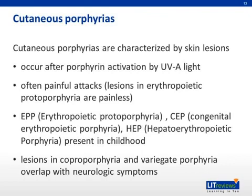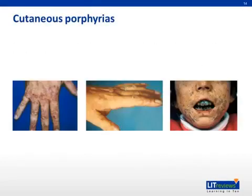Cutaneous porphyrias generally consist of skin lesions, usually with blistering, peeling, erythema, and pain. Porphyria cutanea tarda can be acquired in liver diseases such as hepatitis C, and other cutaneous porphyrias generally manifest mostly in childhood. These three pictures illustrate the blistering, photosensitive, and other cutaneous lesions of the cutaneous porphyrias.